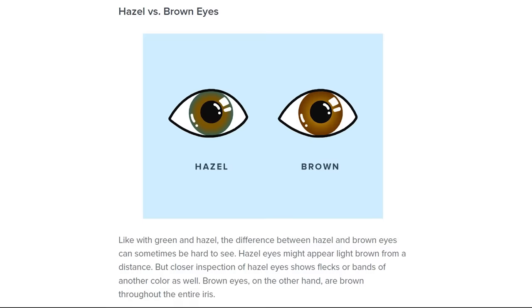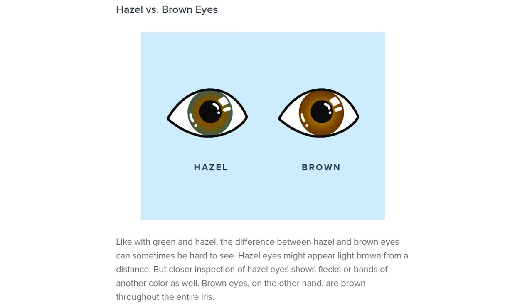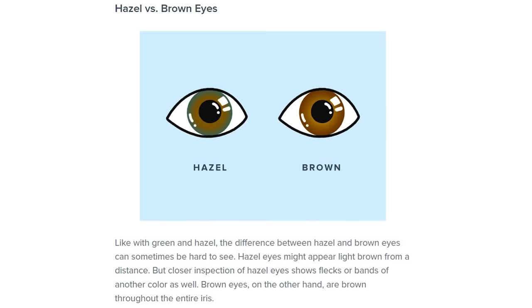Some people also confuse hazel eyes with brown eyes. Brown eyes, however, are mainly brown and may show only slight hints of green or other colours, whereas hazel eyes often have a combination of various colours.